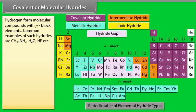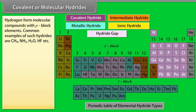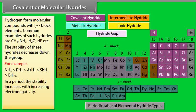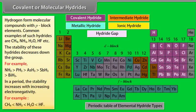Covalent or molecular hydrides. Hydrogen form molecular compounds with P-block elements. Common examples of such hydrides are CH4, NH3, H2O, HF, etc. The stability of these hydrides decreases down the group. For example... In a period, the stability increases with increasing electronegativity. For example...